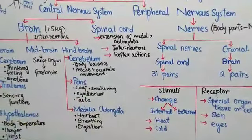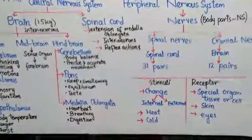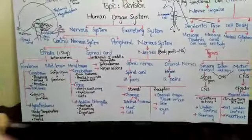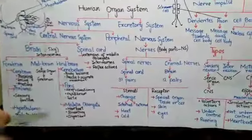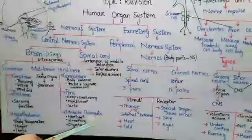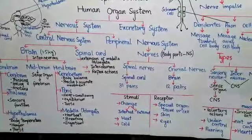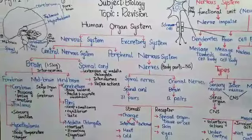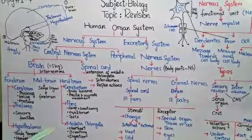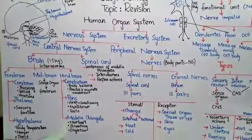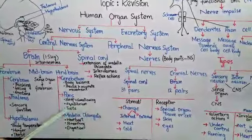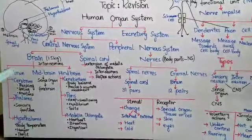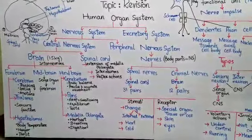An important point: when the rest of the brain is at rest — when you are sleeping and other brain parts are not working — the medulla oblongata continues to work. It works all the time because it controls all involuntary actions. So the medulla oblongata will work every time, even when the rest of the brain's parts are not working.